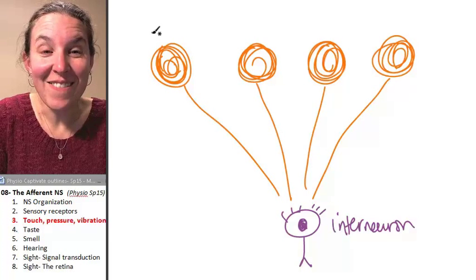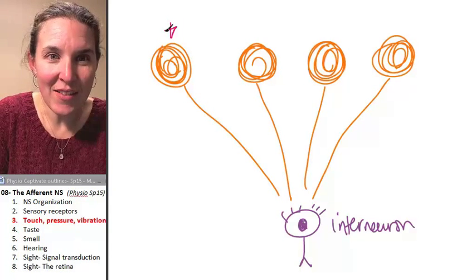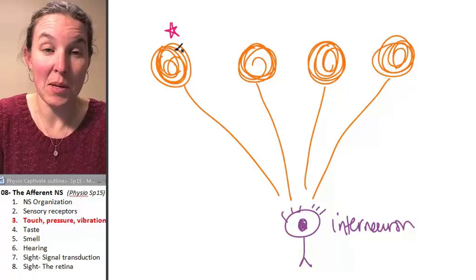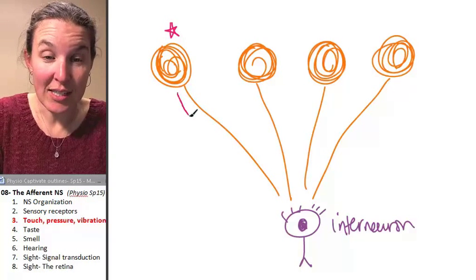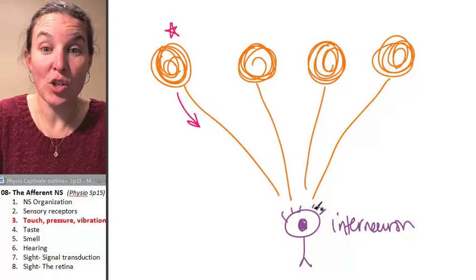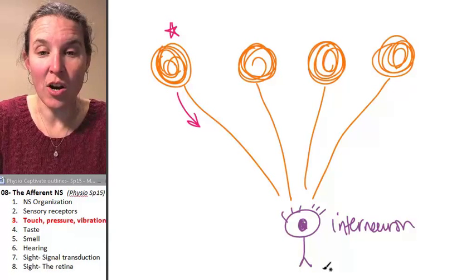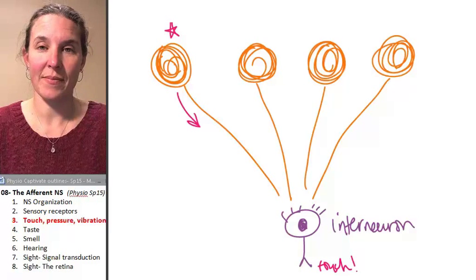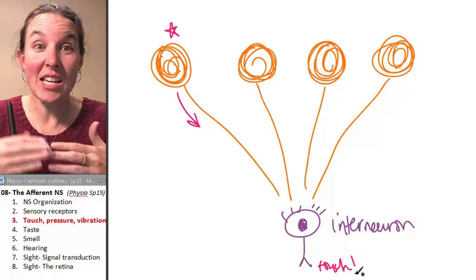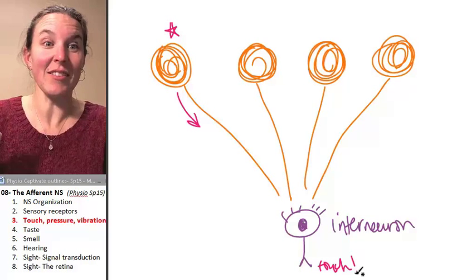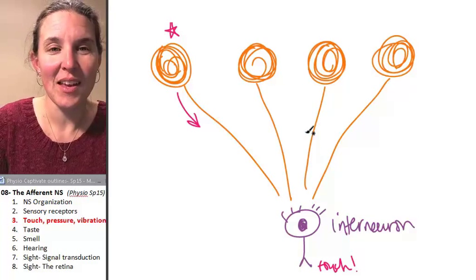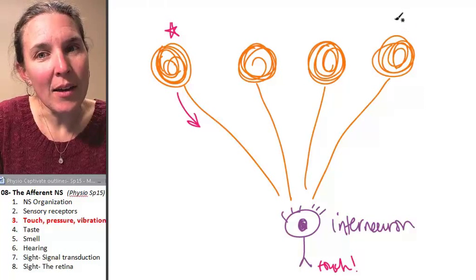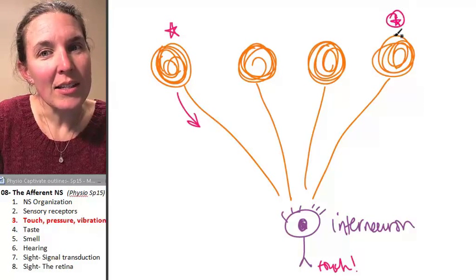Now, if you activate, this is crazy. If you activate this Pacinian corpuscle, you're going to send an action potential to this interneuron. The interneuron is going to say, oh, touch. And the touch message is going to go to the brain and you're going to perceive, oh, touch.